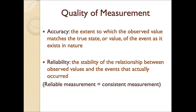Accuracy is the extent to which the observed value matches the true state or true value — that is, observers are recording what has actually occurred. For low frequency or easy-to-count behaviors, that's not a major concern. But when behaviors are difficult to record, accuracy can suffer for a variety of reasons, including high frequency behavior.